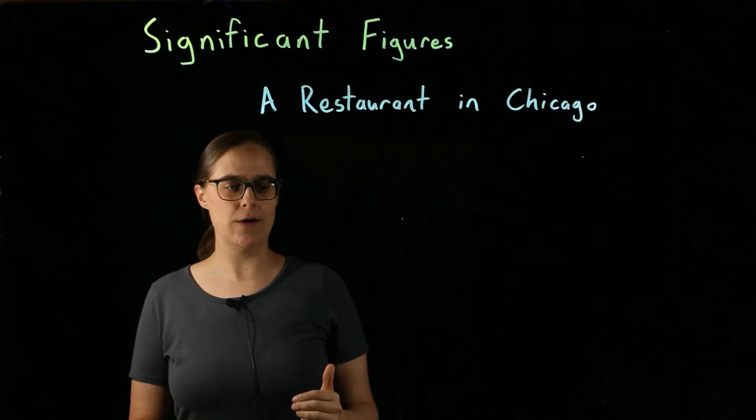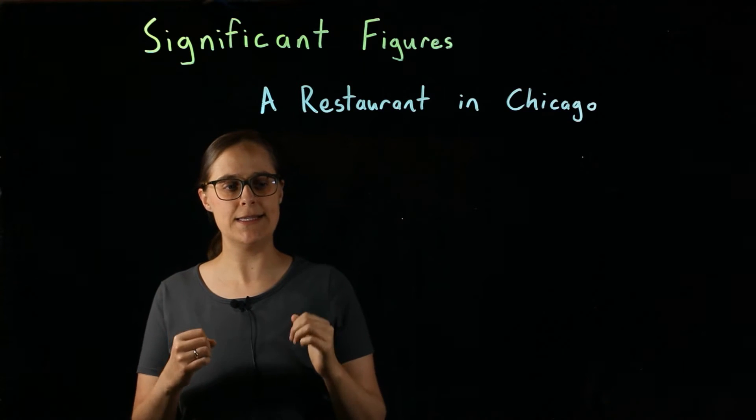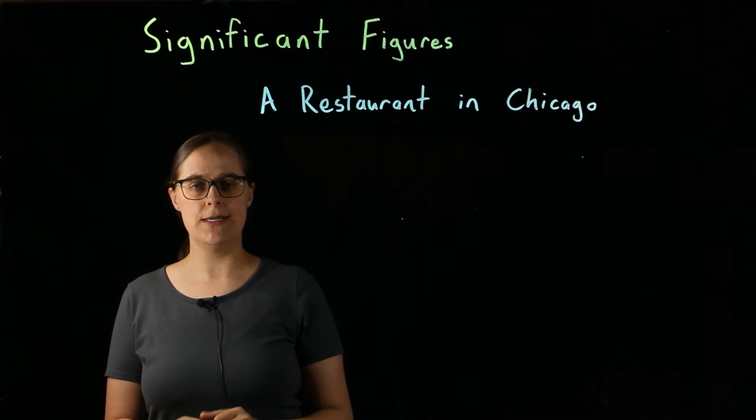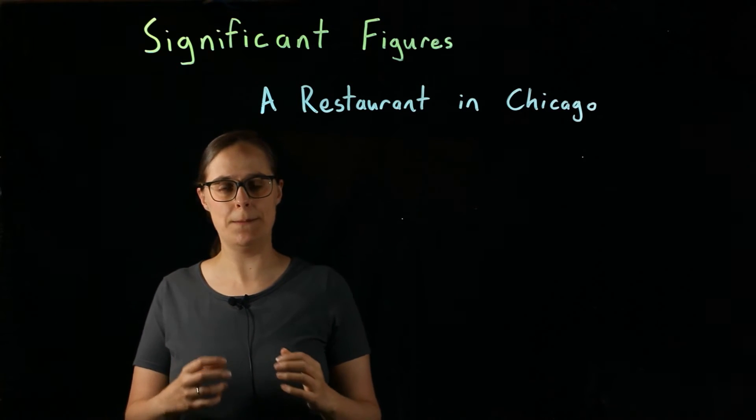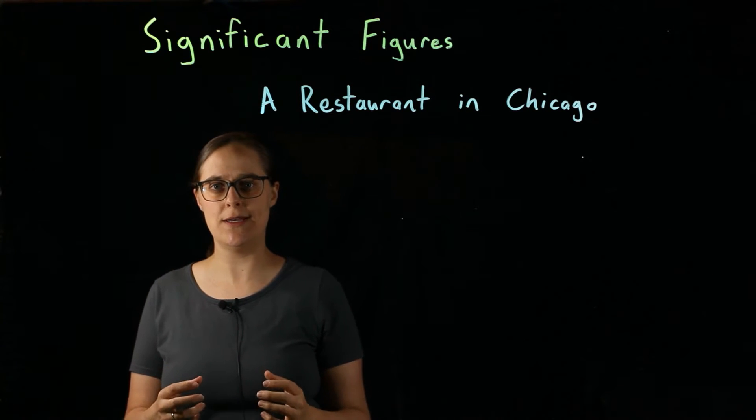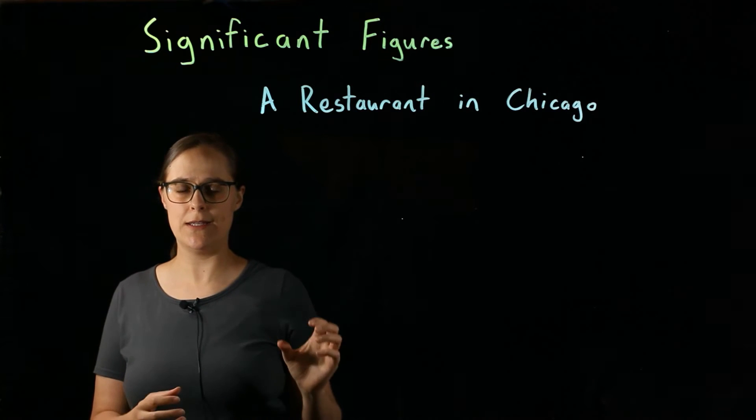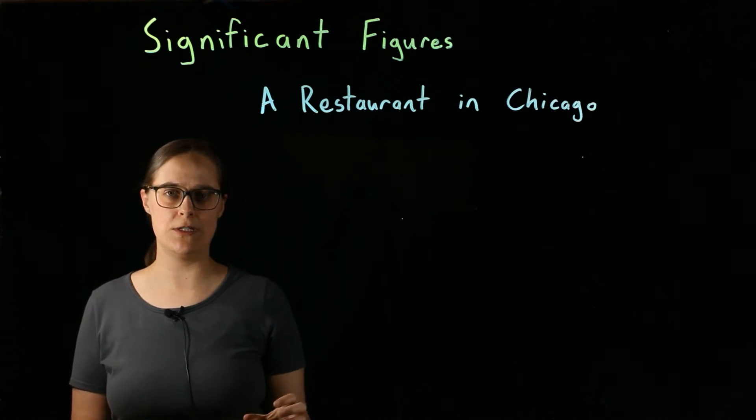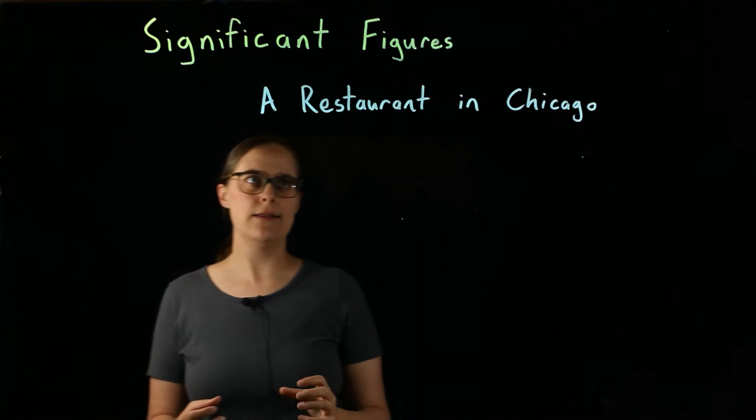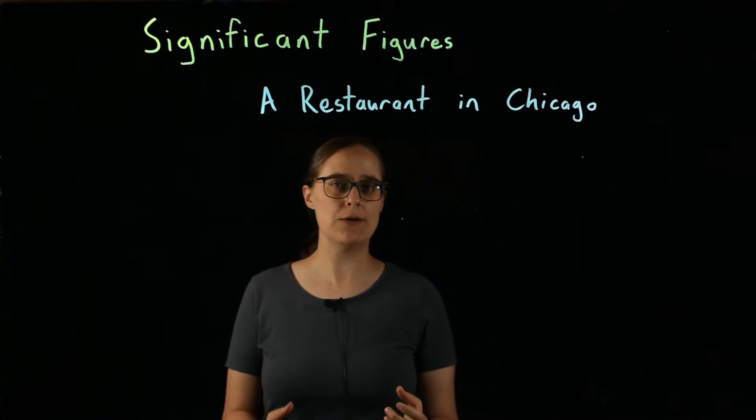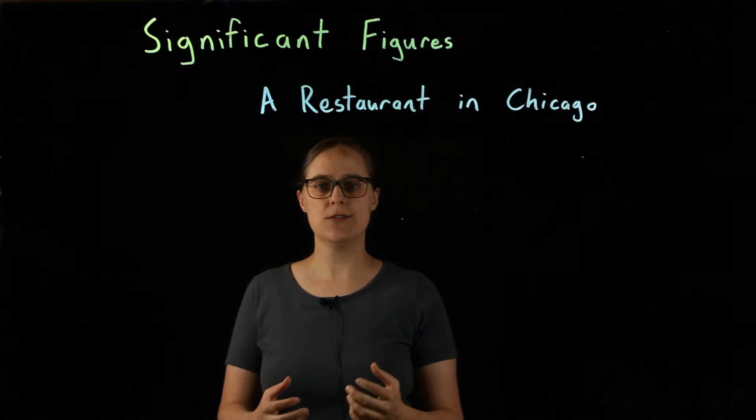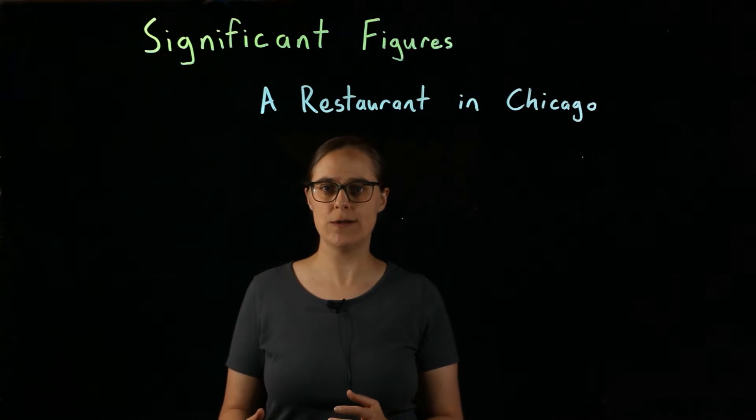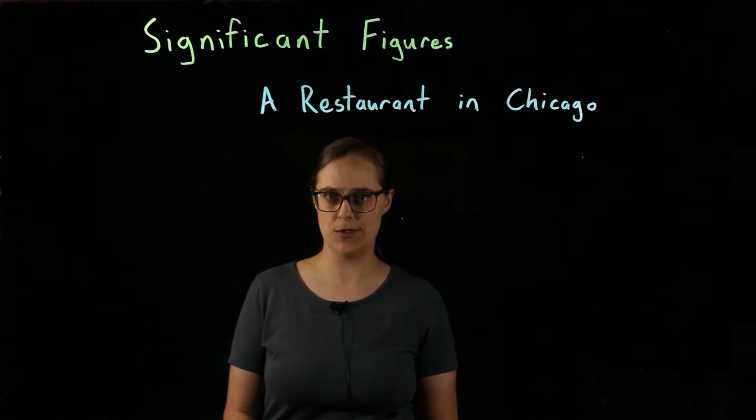Significant figures are about knowing exactly how much information is in a number. It's about recording measured quantities in a way that enables you and other people to look at that number and know exactly which digits are meaningful. There are lots of rules about calculating numbers so that you can calculate a value that does not have any more or less precision than the numbers you started with.